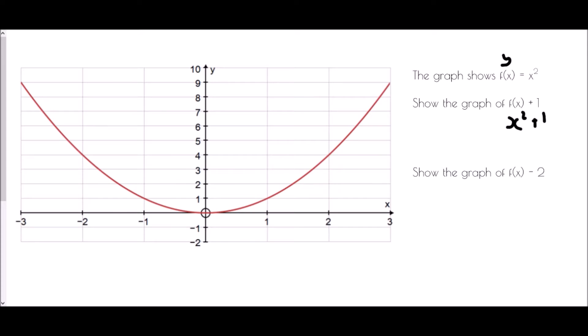What would happen if each time we found our x squared value, we added 1 on? Let's think about a few key points on this graph. I'm going to do f of x plus 1 in blue. When x is 0, that is 0 squared plus 1, and therefore it would now be at 1.